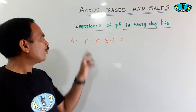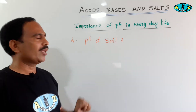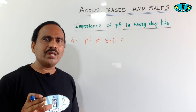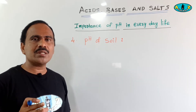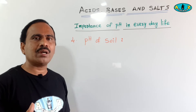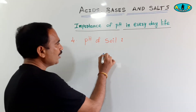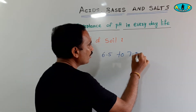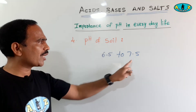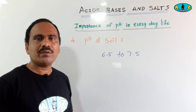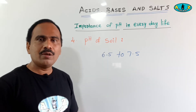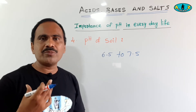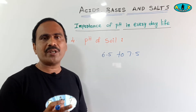Another importance of pH in day-to-day life: pH of soil. The pH value of soil should be nearly neutral — around 6.5 to 7.5 — that means slightly acidic to slightly basic. That soil is very good for the growth of plants. If the pH value is more or less than this range, plants cannot absorb nutrients properly, which has a dangerous effect on the plants.